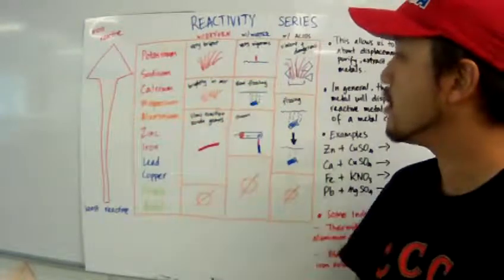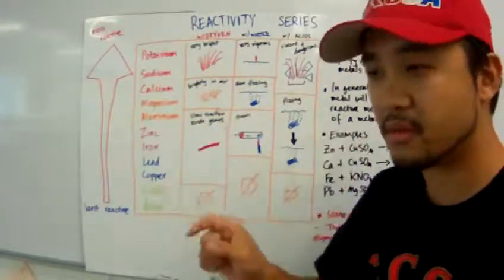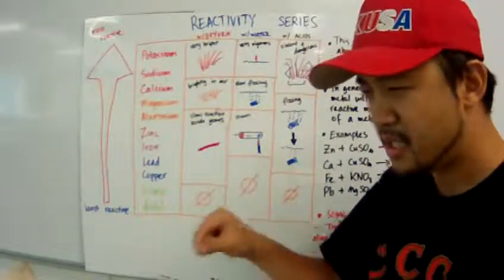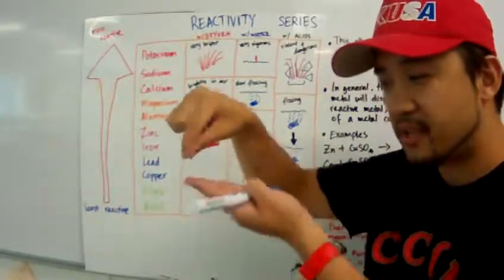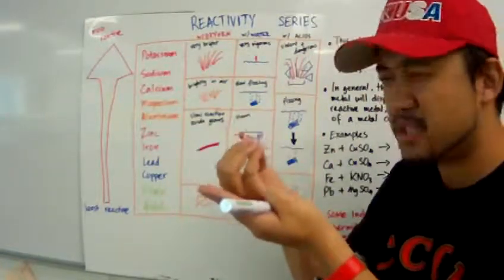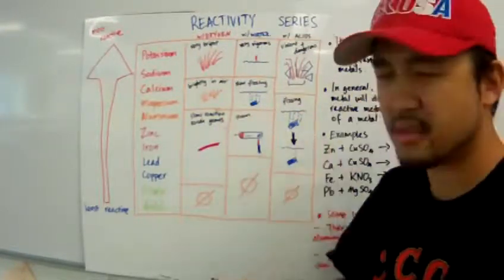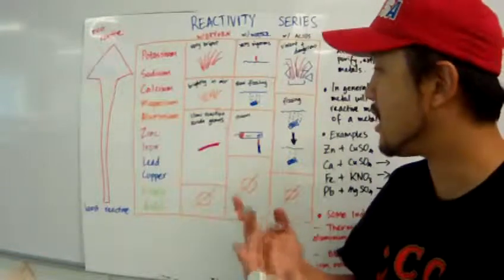For water, in group 1, when you throw a small piece of group 1 metal into water, you will see the metal jumping all around the surface of the water. Big little sparks of flames will occur. For calcium, when you put it into water, you'll see fizzing.